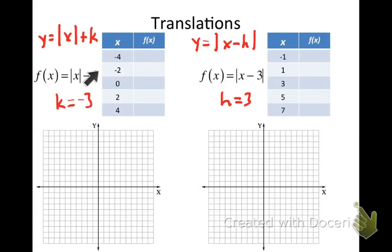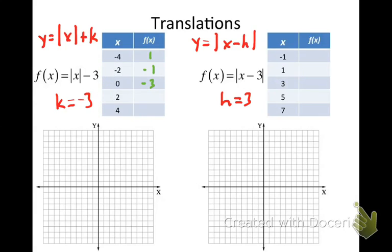Let's focus on the left-hand equation. We take the absolute value of each input and then decrease that output by 3. The absolute value of negative 4 is 4; decrease by 3, you get 1. The absolute value of negative 2 is 2; subtract 3, you get negative 1. The absolute value of 0 is 0; subtract 3, you get negative 3. And inputs 2 and 4 give us negative 1 and 1 respectively.